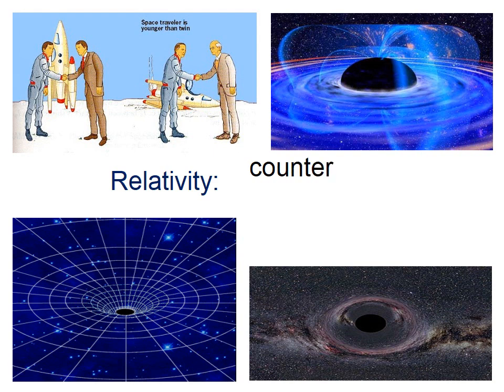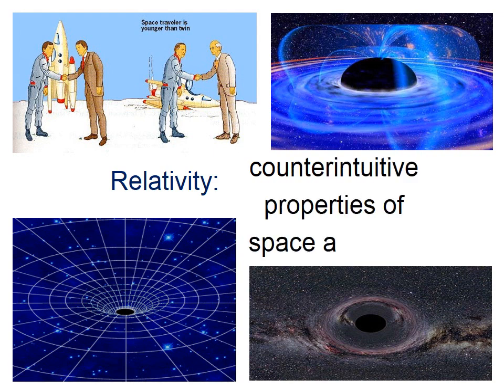One topic that we don't often study in a first year high school physics course is relativity. Relativity deals with counterintuitive properties of space and time — in other words, properties that our common sense would guess to be incorrect. Time slowing down, space being warped. It's a fascinating topic, but in a first year physics course you might not touch on relativity.